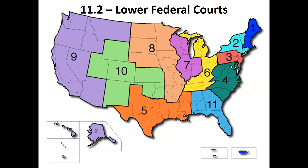Hello everyone and welcome to our second lecture in chapter 11. This one's on the lower federal courts, the courts that are actually underneath the Supreme Court. If you take a second and look at the map on screen, this is actually the list of the district court regions across our country, and you can see Michigan is in the sixth district.